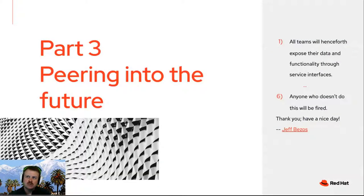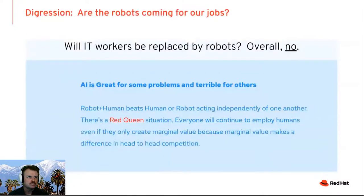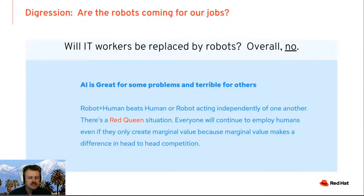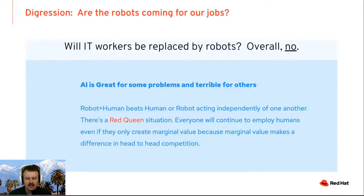Peering into the future — I'm talking a lot about the impact of machine learning and artificial intelligence on IT, and commonly I hear sentiments related to 'the robots are coming for our jobs' — that a lot of what's done in IT is going to be obsolete because of machine learning. I think that's definitely not going to happen. AI is great for some problems and terrible for others. If we imagine a customer service line, it's very difficult for artificial intelligence to act on a phone as though it was an actual person — you can almost always tell. It's very hard to pass the Turing test when it comes to speech.